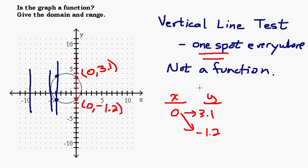So the vertical line test is very easy and very fast to determine whether something is a function. Let's go to the second part and talk about the domain and range.